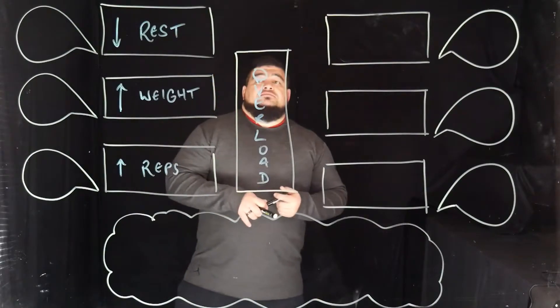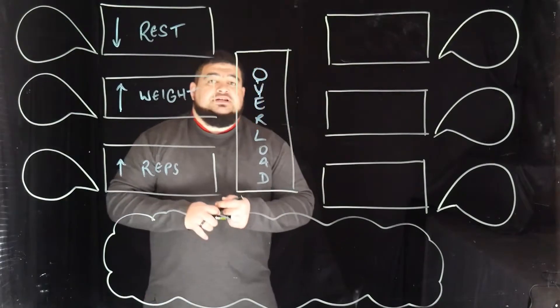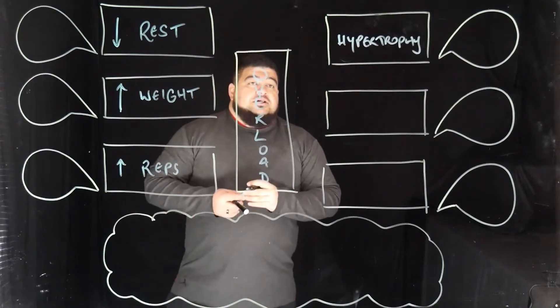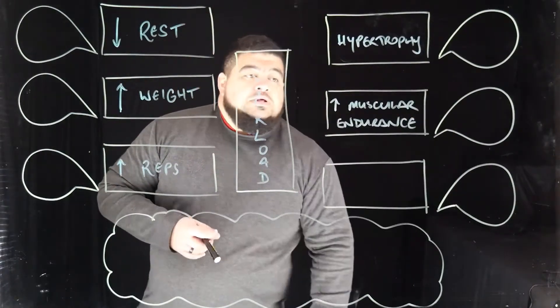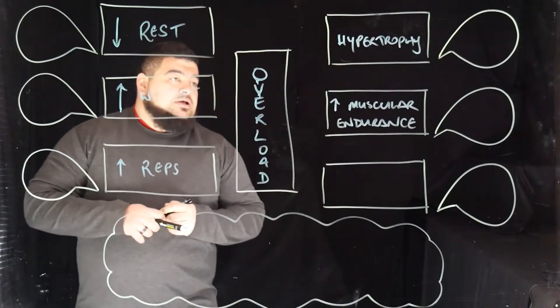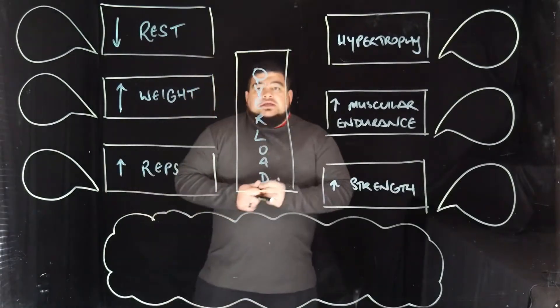So one of the possible effects of reaching overload - decreasing rest, increasing weight, or increasing reps - is hypertrophy. Another one is that we increase our muscular endurance, and another effect is that we increase our strength. Cool. So now we're going to go through and explain the 'why'.